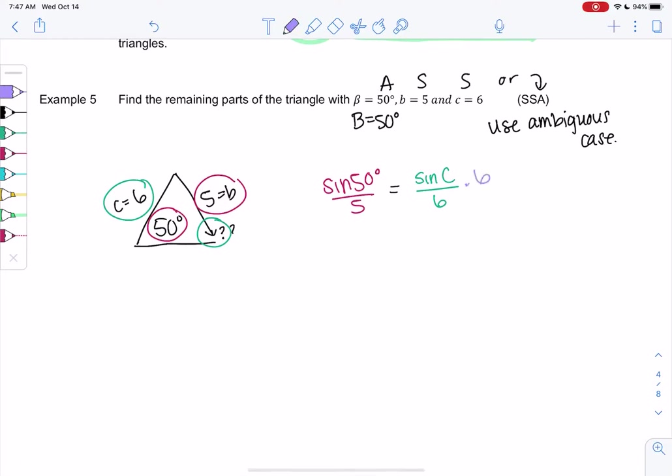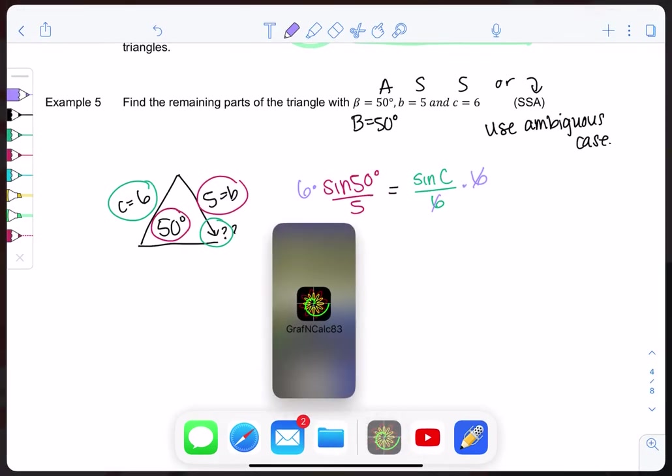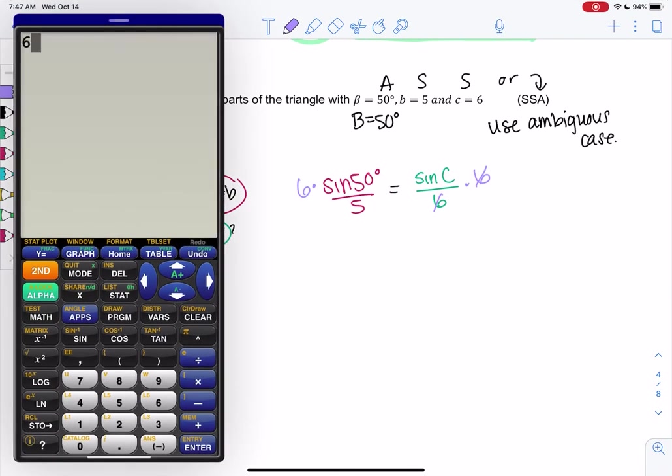And we'll multiply by 6 to solve. I like sine on top here because we're solving for angles. So 6 sine of 50 over 5 equals this. So sine of C equals all that.